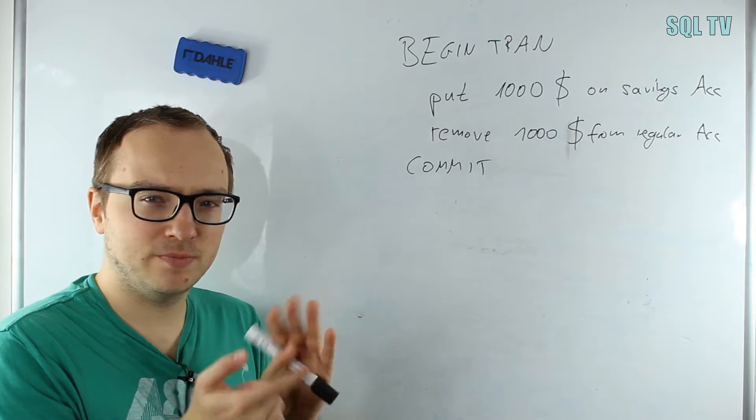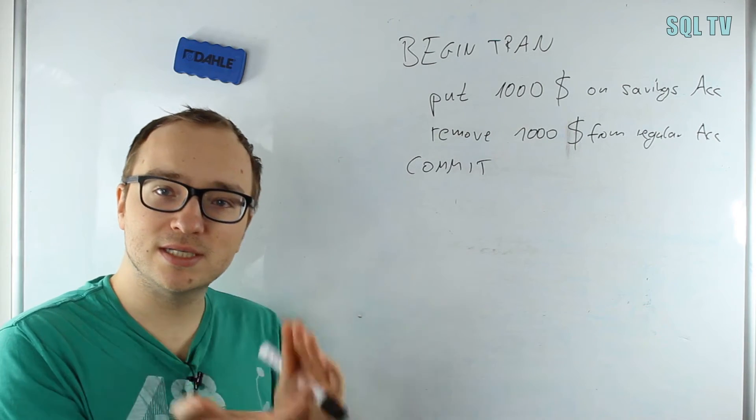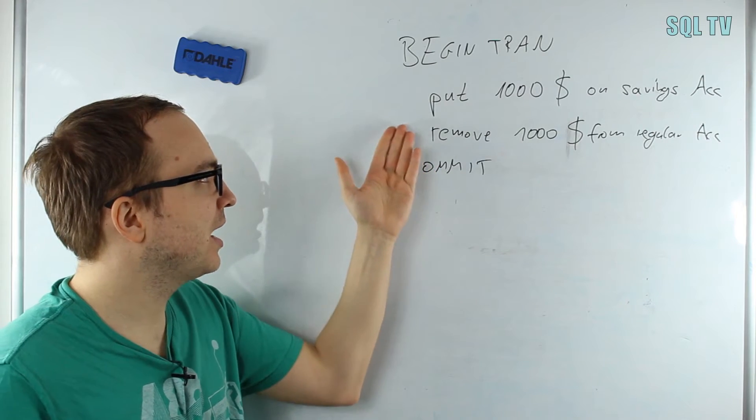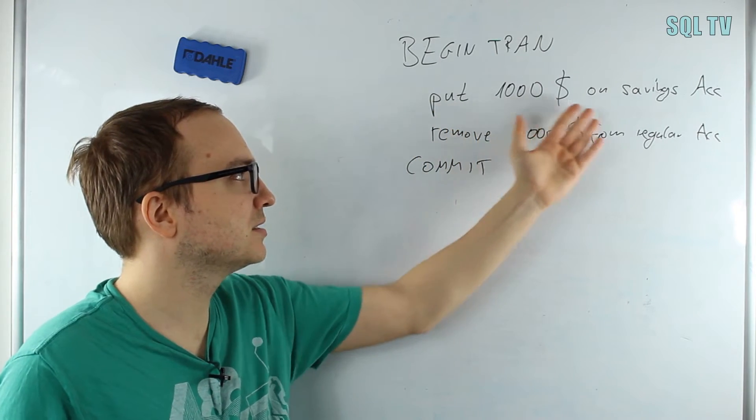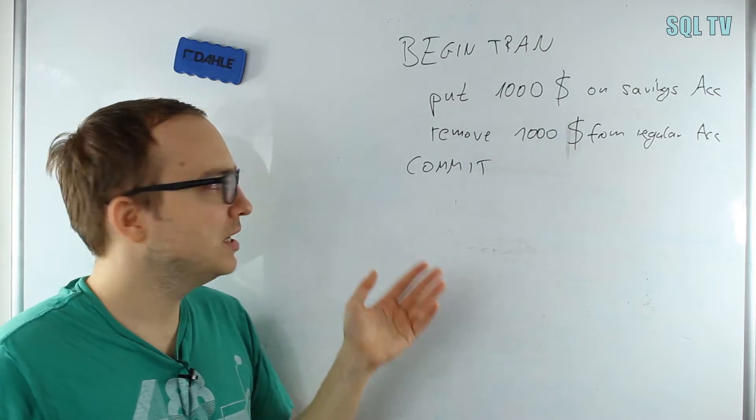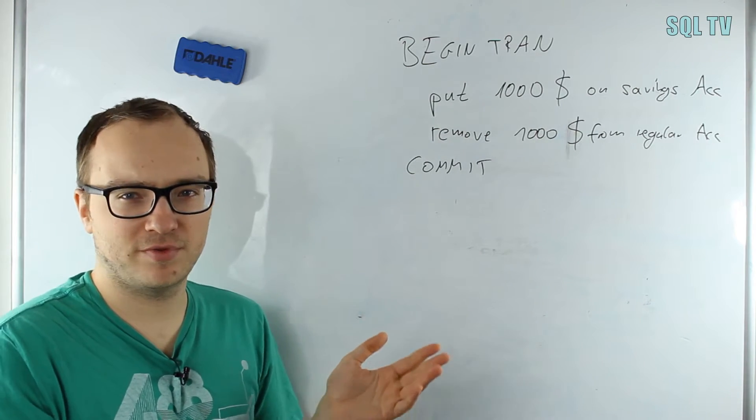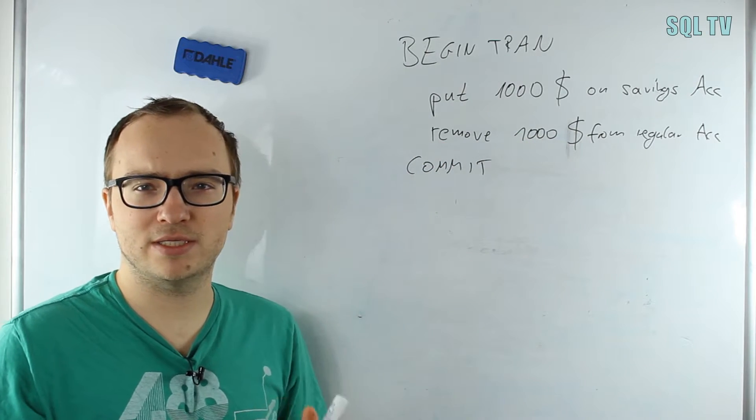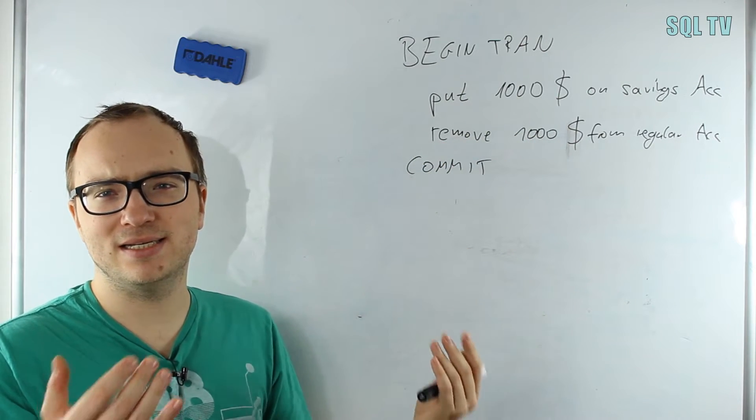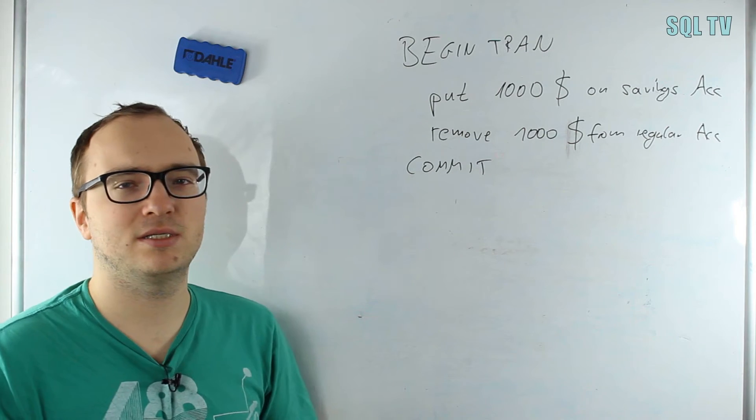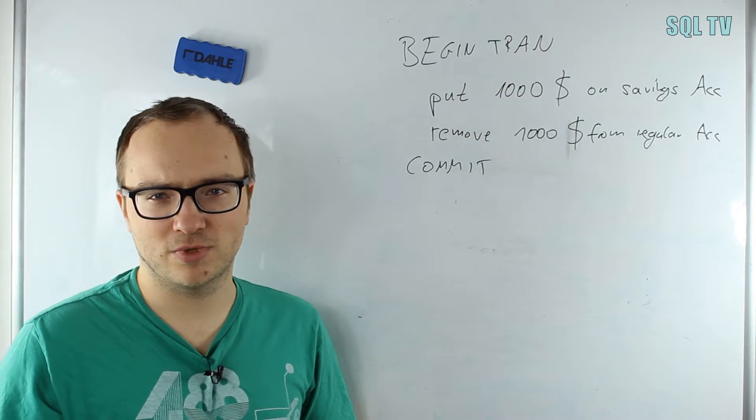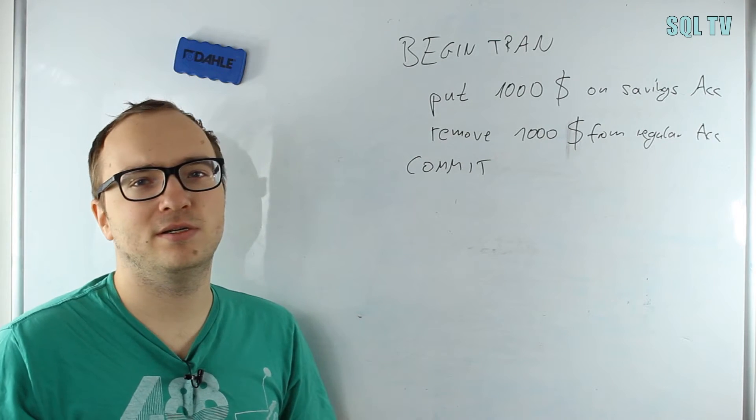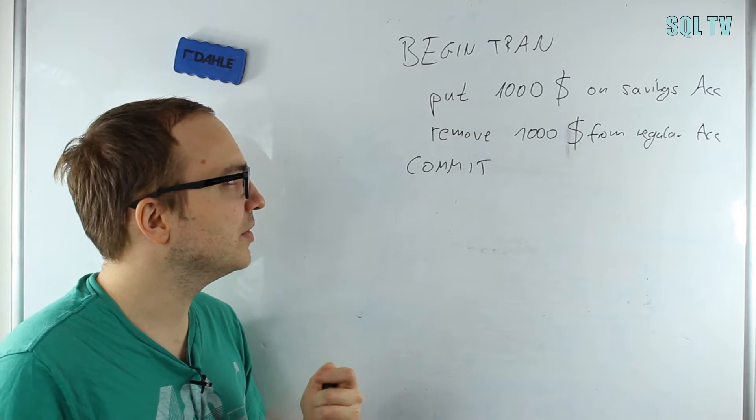All of those three—Atomicity, Isolation, and Durability—lead to the Consistency property. My database is always consistent, meaning I can't have $1,000 coming up out of nowhere on my savings account and the database is fine with it. It can't happen; it has to be rolled back or it has to do the other transaction as well. All three basically lead to consistency, that my database is always consistent.